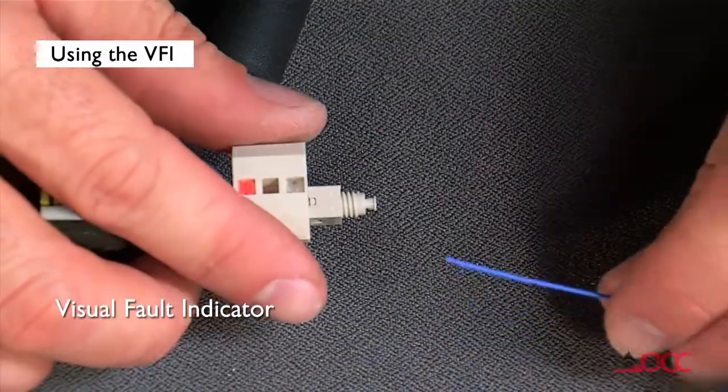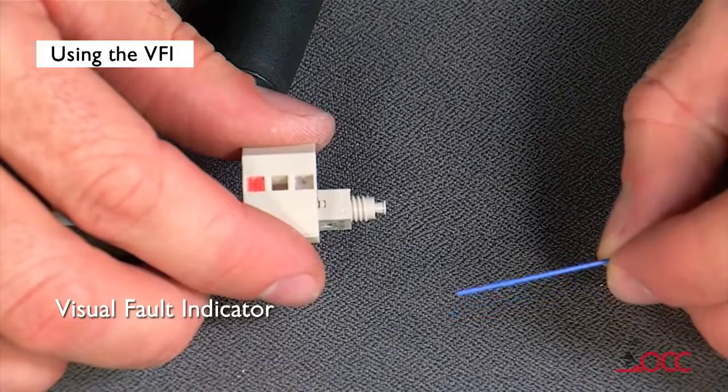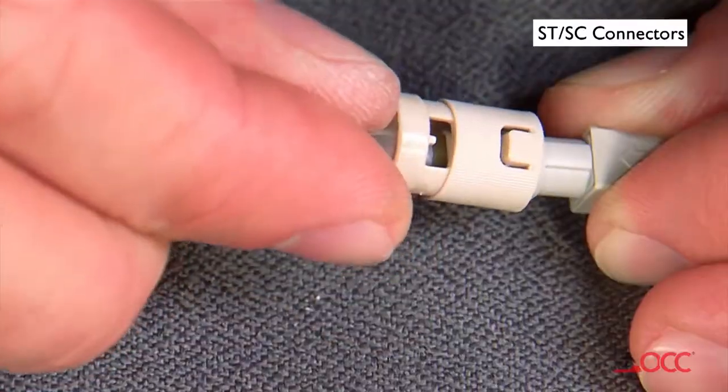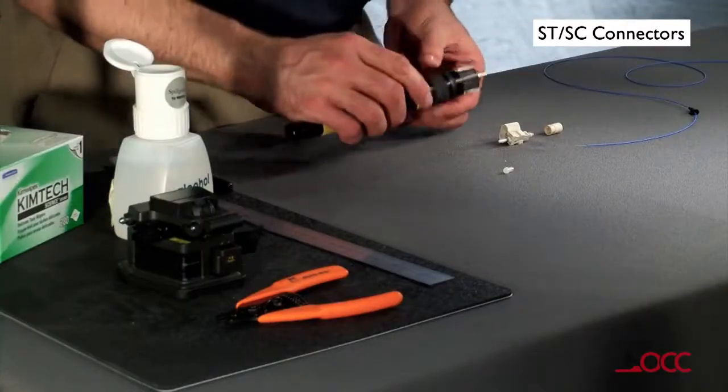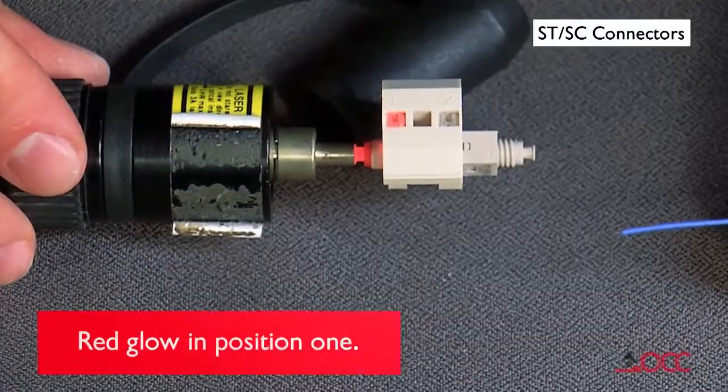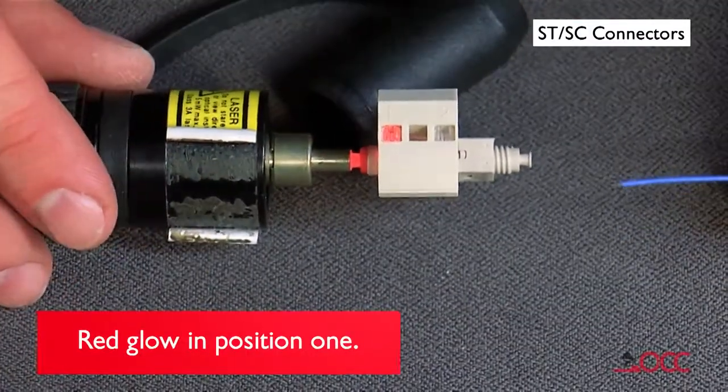Use a visual fault indicator, or VFI, as an aid to determine if the fiber and connector are properly connected. Remove the express connector dust cap and insert the connector into the VFI. Turn the VFI on and there will be a red glow in position one of the wedge clip.